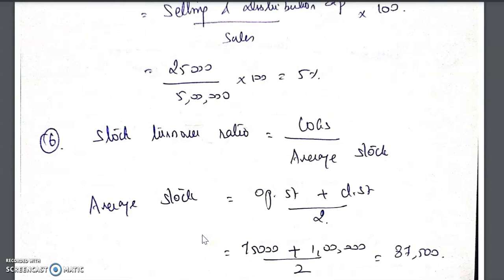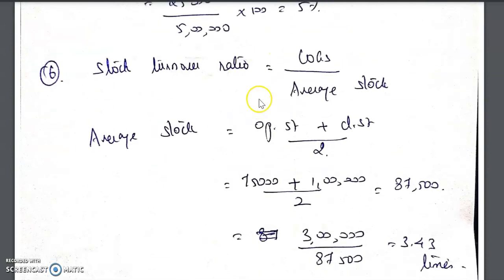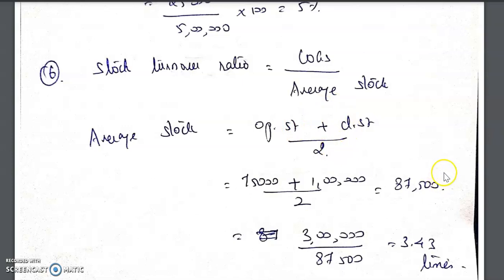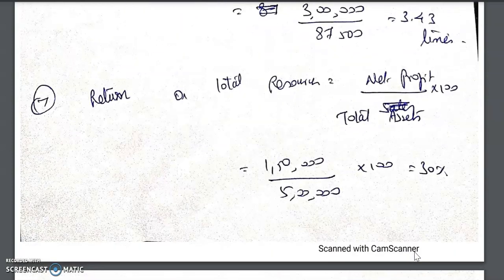For stock turnover ratio, we have opening stock and closing stock, so we find the average stock. COGS is already calculated as 3,00,000. Average stock = (opening stock + closing stock) divided by 2 = 87,500. Stock turnover ratio = COGS divided by average stock = 3,00,000 divided by 87,500 = 3.43 times.